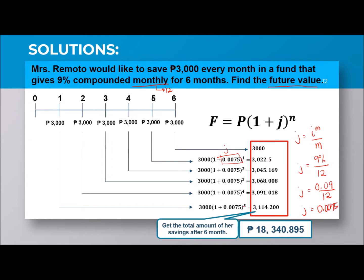Notice that N decreases month by month — on the first month you have five months remaining, on the second it is 4, then 3, 2, 1. The last payment does not accumulate. The total is 18,340.895. An important note: be careful when cutting decimals, as rounding too early significantly affects the result in subsequent topics.